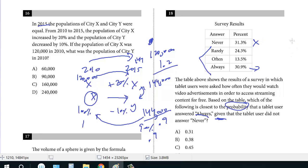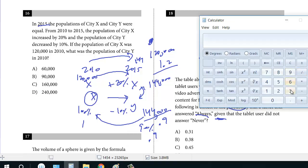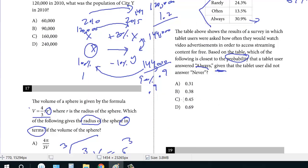Given that the tablet user did not answer 'never' means we're only considering these percentages. If it's never, that's not going to be any indication of usage. So we're not counting that. This adds up to about 69%. So given that it's only those 69%, we want the probability from that 69% of 'always.' So it's really 31 over 69, which is about 45%. The answer here is C.